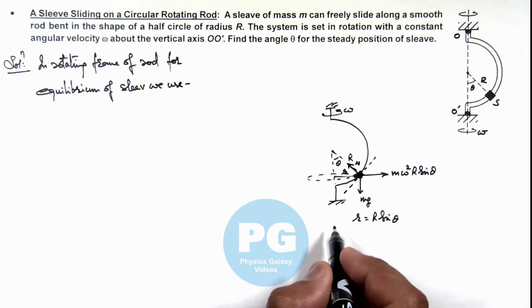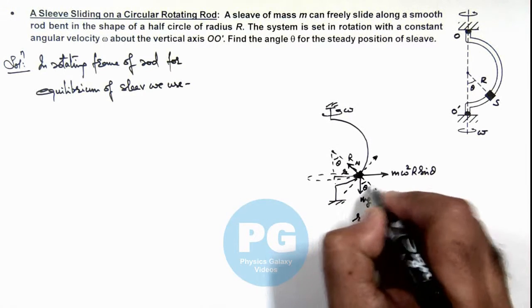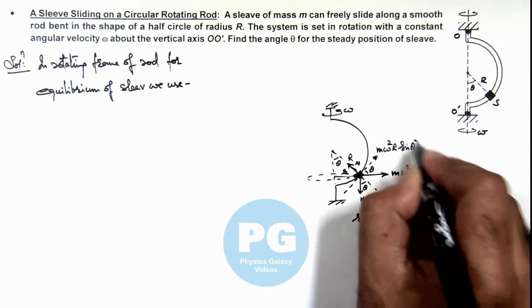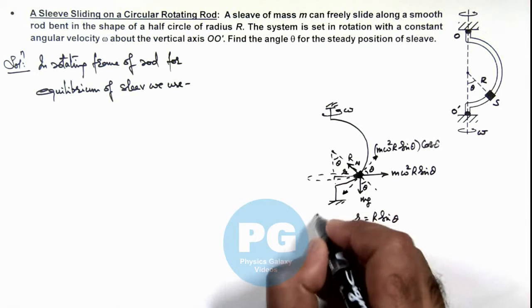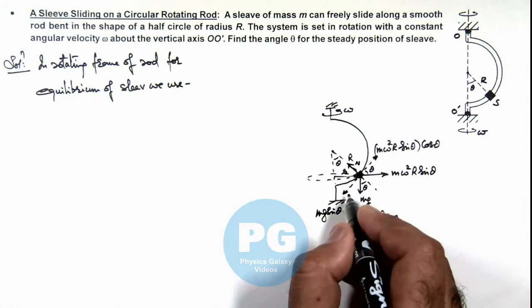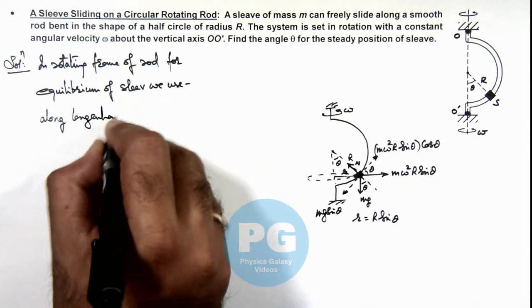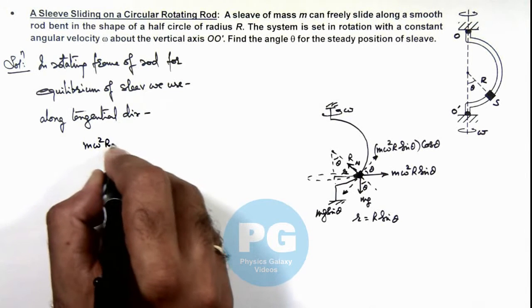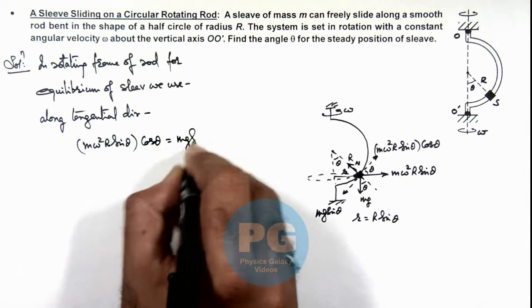This is the equilibrium position of the sleeve. In this direction, it will be experiencing a force which is mω²R sin θ cos θ. This is the cosine component of the centrifugal force. And in this direction, it is mg sin θ, the sine component of the weight acting on it. So mω²R sin θ cos θ should be balanced by mg sin θ.